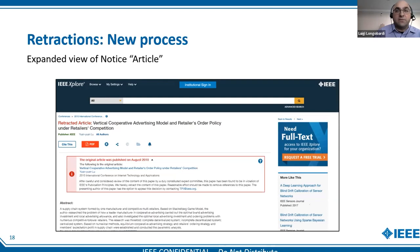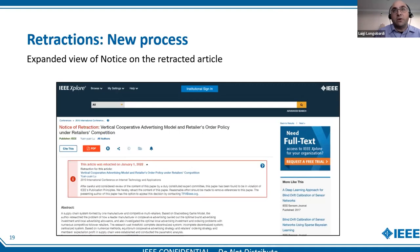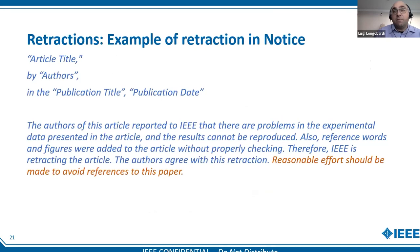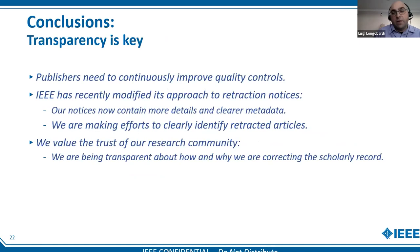The retraction notice is shown on the landing page of the retracted article and links to the landing page of the retraction notice. Another step we are taking is to add watermarking to the PDF of retracted papers with the word 'retracted.' One thing we are trying to do is adding to the retraction notice a sentence that reasonable effort should be made to avoid reference to this paper, or if making a reference to the paper, it should be done with the knowledge that the paper has been retracted and the science has been challenged. To conclude, we really believe that transparency is key, as is improving our quality controls. We have recently modified our approach to retraction notices — they now contain more detail, clearer metadata, and clearly identified retracted articles.